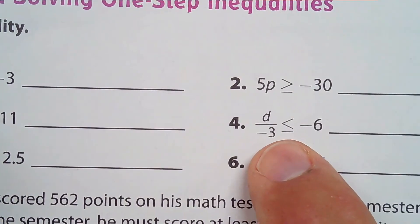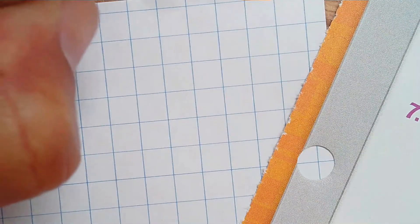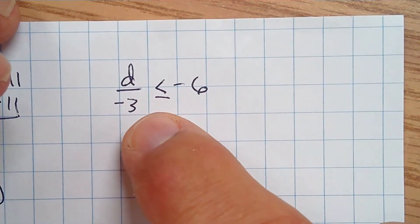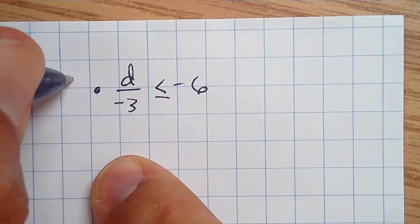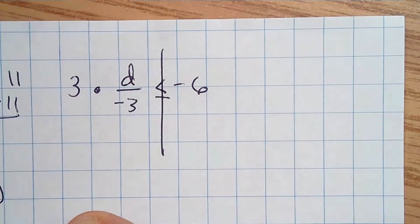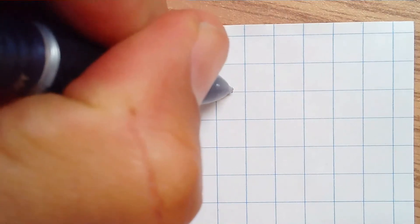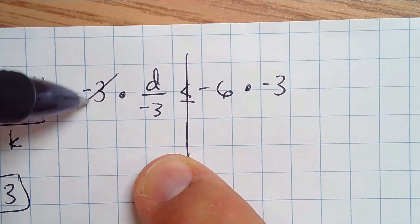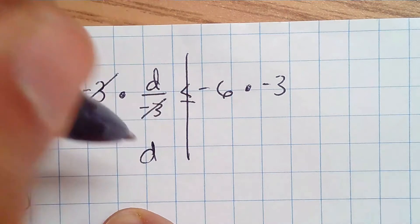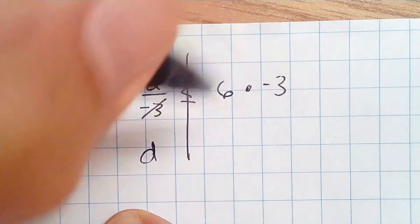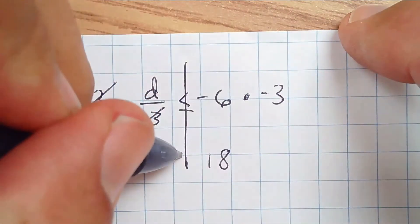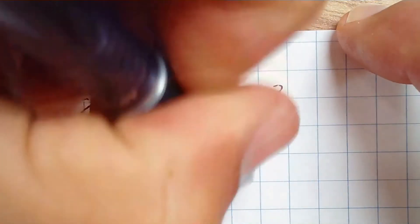Number 4: d divided by negative 3 is less than or equal to negative 6. The inverse of dividing is multiplying, so we multiply both sides of that inequality by negative 3. When you divide by negative 3 and multiply by negative 3, the actions cancel each other out, leaving d. Negative 6 times negative 3 is positive 18. I multiplied both sides by a negative, so that switches the direction of the inequality. This is the final answer.